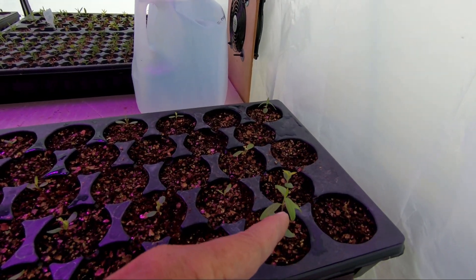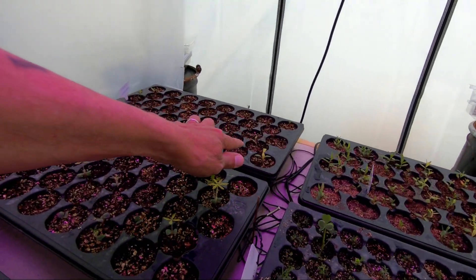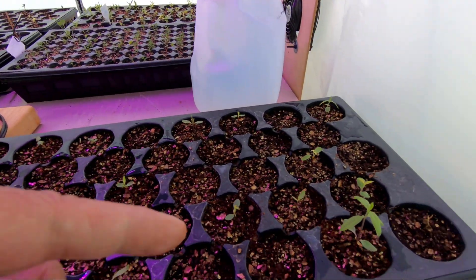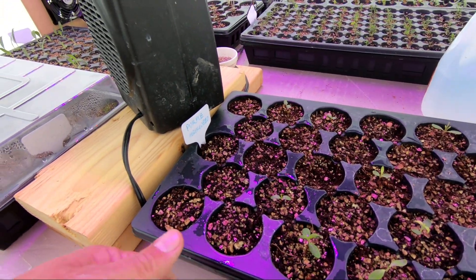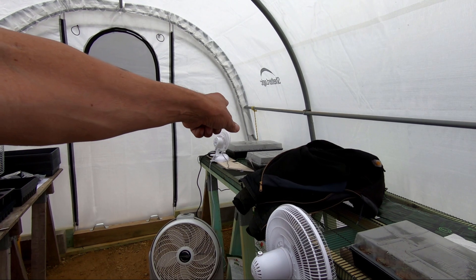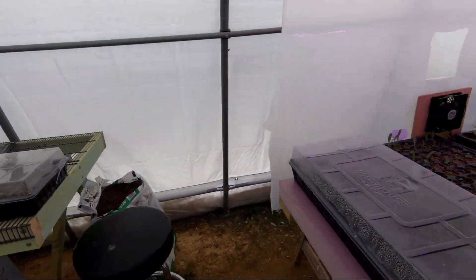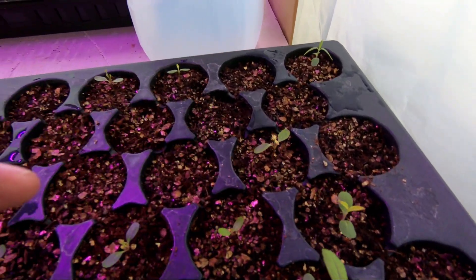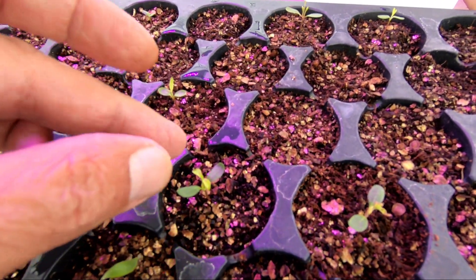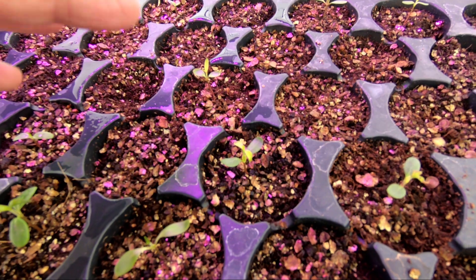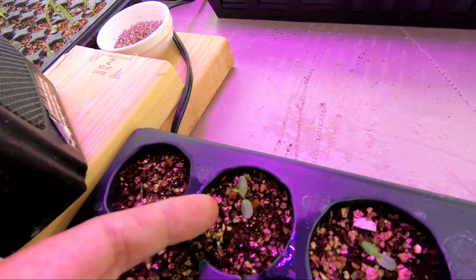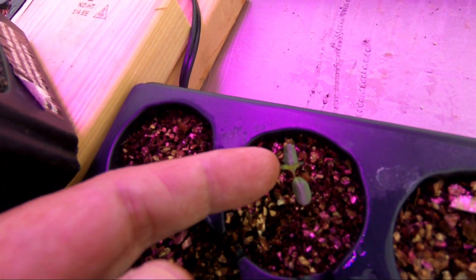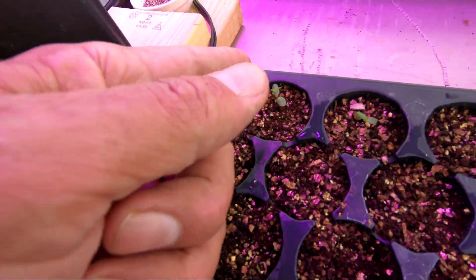This tray I took out of here and it's been out for four or five days and it perked back up. Some of these where the apical meristem, the shoot or growth shoot, where that's damaged, I don't know if they're going to come back at all. But where the apical meristem is not damaged, I think they're going to do fine.